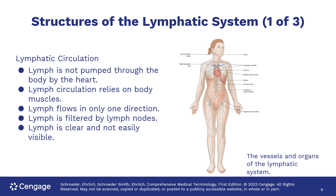The lymphatic circulation is different from blood in that it is not pumped through the body. The circulation is propelled through the musculature of the body and flows only in one direction. The lymph is filtered by the lymph nodes.